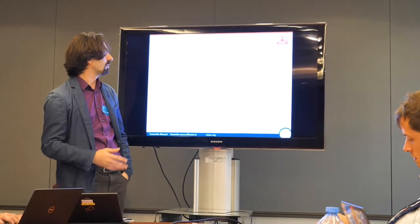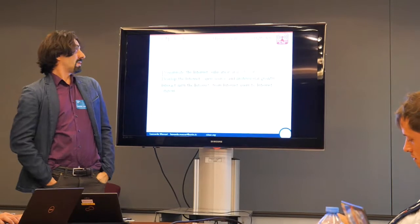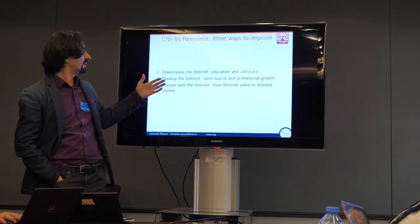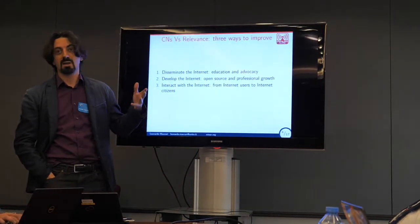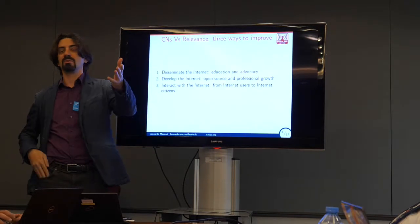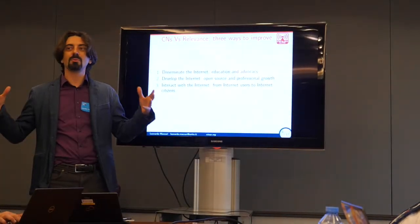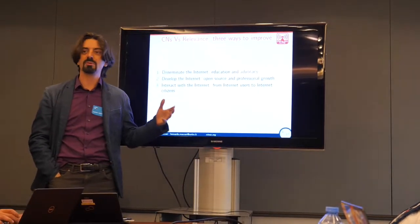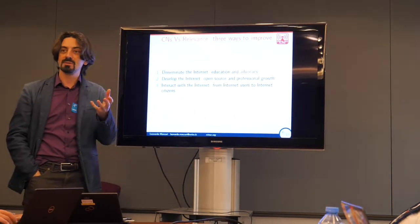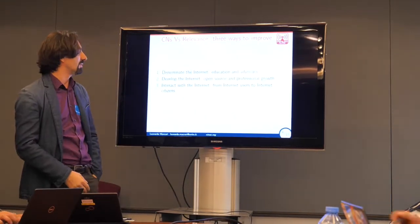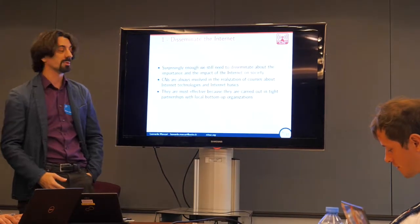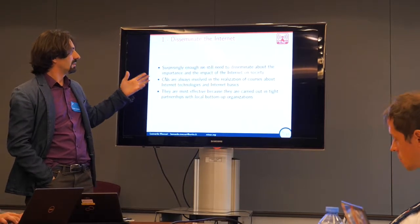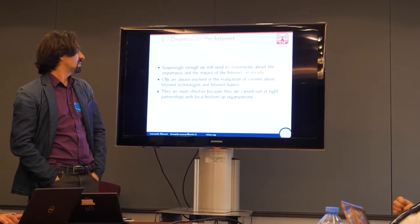Relevance is really important to understand the way that people use and will use the network. Community networks work a lot on relevance, mostly in three ways in my experience. They disseminate the internet — doing education and advocacy on what the internet is for. They develop the internet, actually enlarging it at the edges, at the fringes. And then they interact with the internet, turning internet users into internet citizens — people that want to have a voice on the way that internet works.